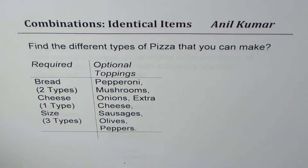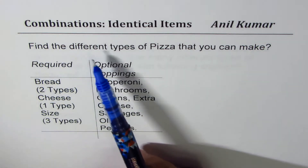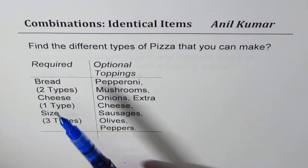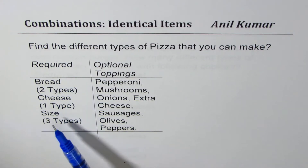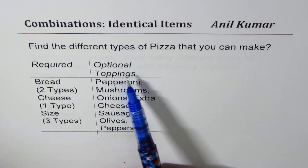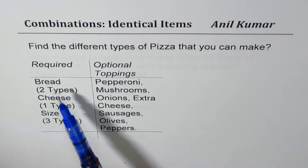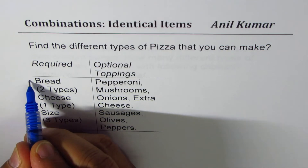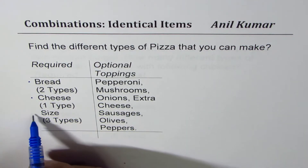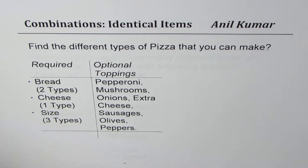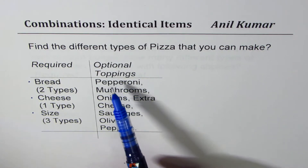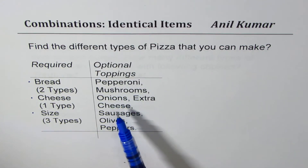I'm Alil Kumar and in this video we'll take up a case where we have few essential items and few optional items and we'll try to count the number of combinations possible. We are taking a very popular example: find the different types of pizza that you can make. Required items are bread, cheese, and size of pizza, and optional items are all the different kinds of toppings. In this example I've taken two types of breads, one type of cheese, and three types of sizes.